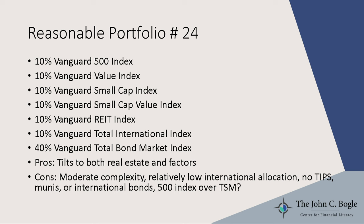The Coffee House portfolio has six stock asset classes at 10 percent each and 40 percent in a bond fund. The benefit is you're now getting tilts — overweighting factors like small and value that are supposed to potentially do better in the long run. It has a relatively low international allocation and stepped-up complexity compared to earlier options. There are still no TIPS, munis, or international bonds, and I'm not a big fan of the 500 index over the total stock market — why have 500 stocks when you can have 4,000?